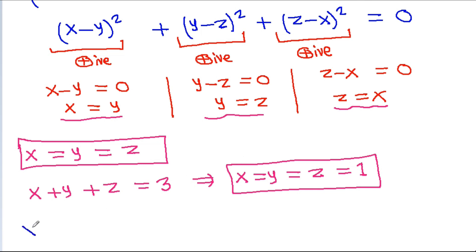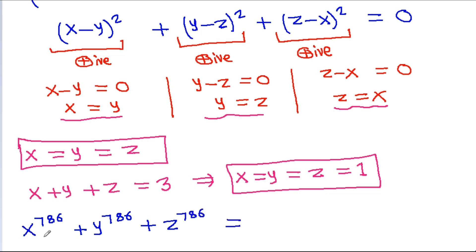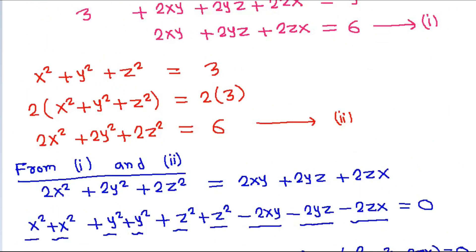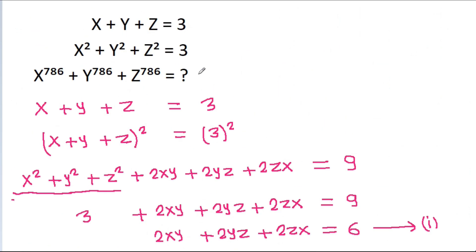Hence, x power 786 plus y power 786 plus g power 786 will be equal to 1 power 786 plus 1 power 786 plus 1 power 786, which is 1 plus 1 plus 1. That is equal to 3. So the answer is 3.